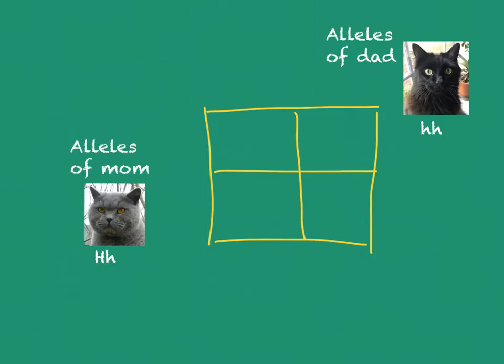Underneath, just to make it simpler, I put the genotype we worked out on the other side. At the top, you put the alleles of the dad, and along the side you put the alleles of the mom. The dad only has the recessive allele for long hair, so that is the only allele he can pass on — he has two copies of it. The mom has an allele for short hair, which she could pass on, or an allele for long hair.